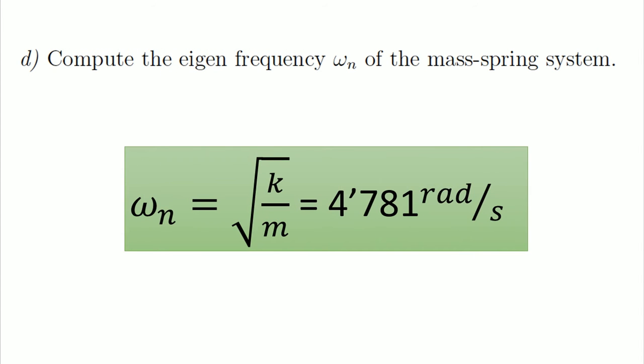In part D, I have computed the natural frequency of the system, where omega n is the natural frequency, K is the total K that we calculated in the first part of the exercise, and M is the mass of the airplane. The answer is in radians per second.